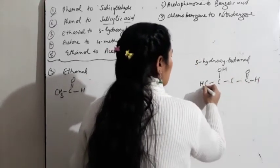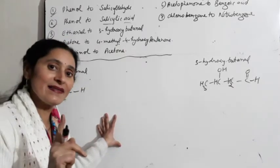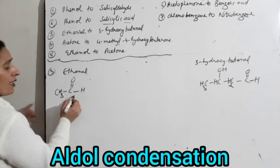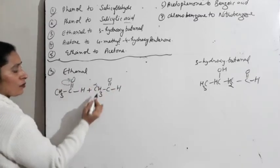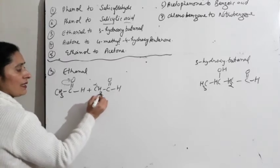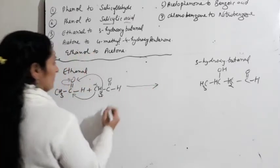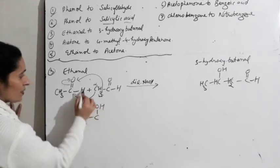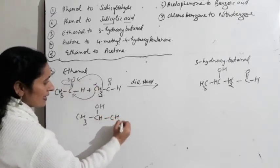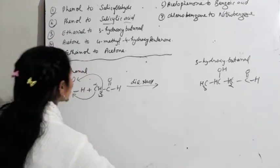Idhar ban gaya beta-hydroxy aldehyde — yes, this is aldol condensation. Isi tarah ka doosra molecule: ek alpha hydrogen yahan se ek alpha hydrogen pahunchega iske paas aur yeh group iske paas. In the presence of dilute alkali, yeh bana CH3-COH, yeh iske saath laga hai, iska H udhar chala gaya, to yeh bana CH2=C-OH — yeh product. Isse 3-hydroxybutanal clear.